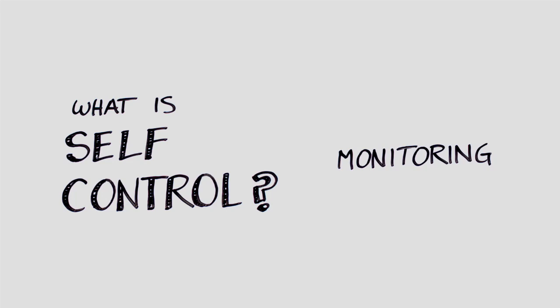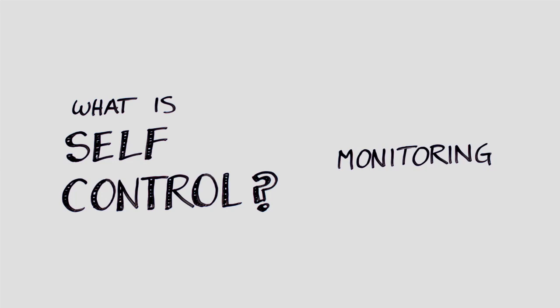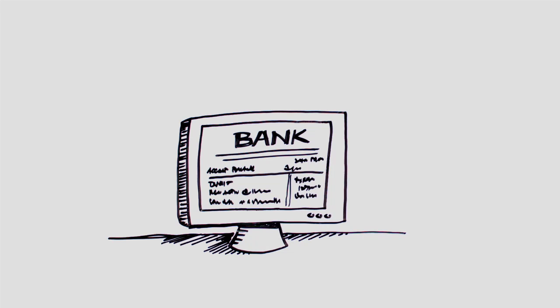What is self-control? It has three parts. Monitoring: how much we keep track of what we're doing. How often you weigh yourself, check your bank balance, or keep track of your grades.